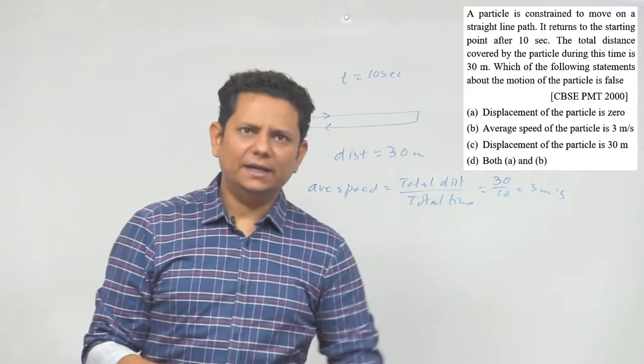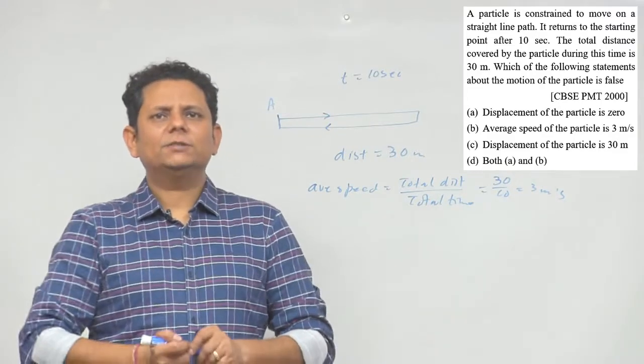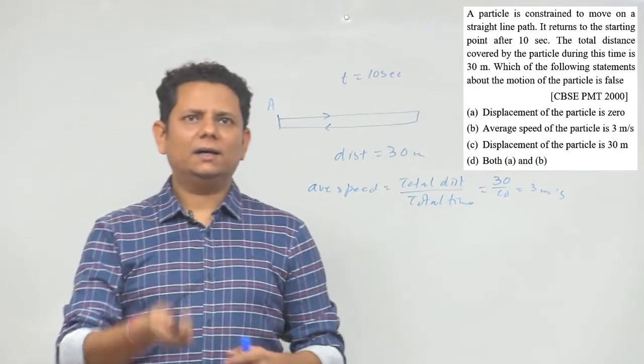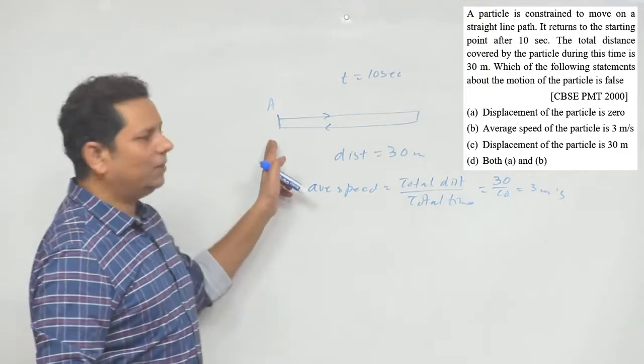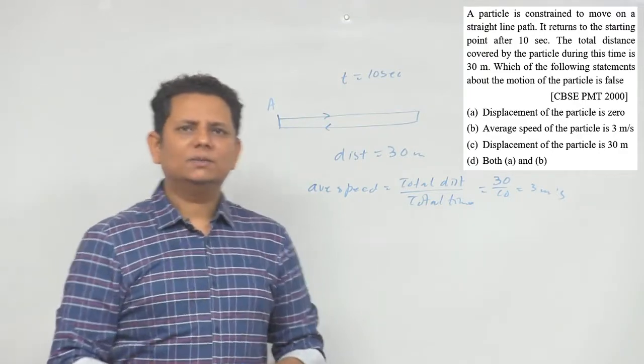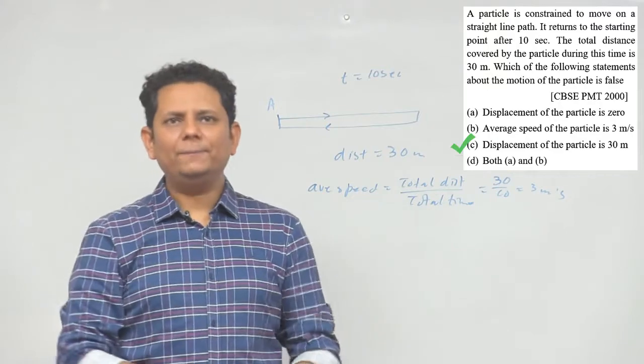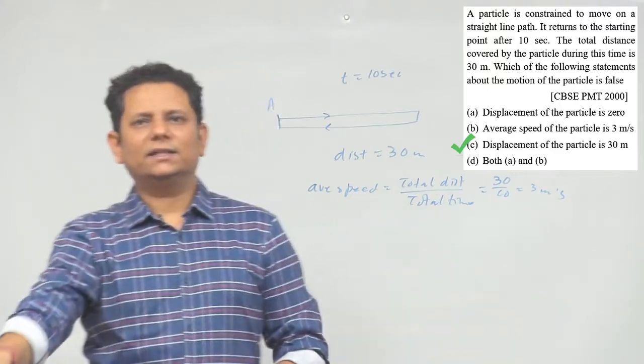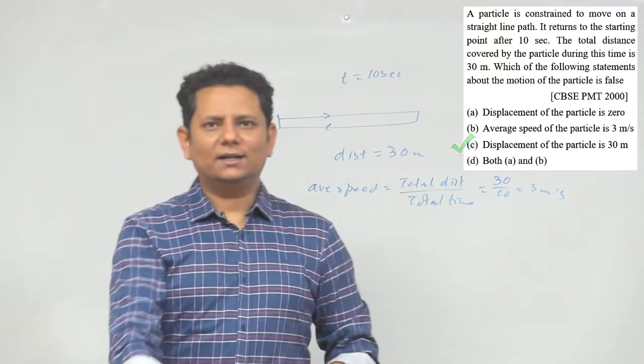Yaani ki option number b sahi hai. Option number c, displacement of the particle is 30 meter, now yeh baat galat hai. Because laut ke aaya, displacement zero hai. To option number c aapka galat statement, hence right answer ho gaya. So based on this hum keh sakte hai ki option number c would be the correct choice.